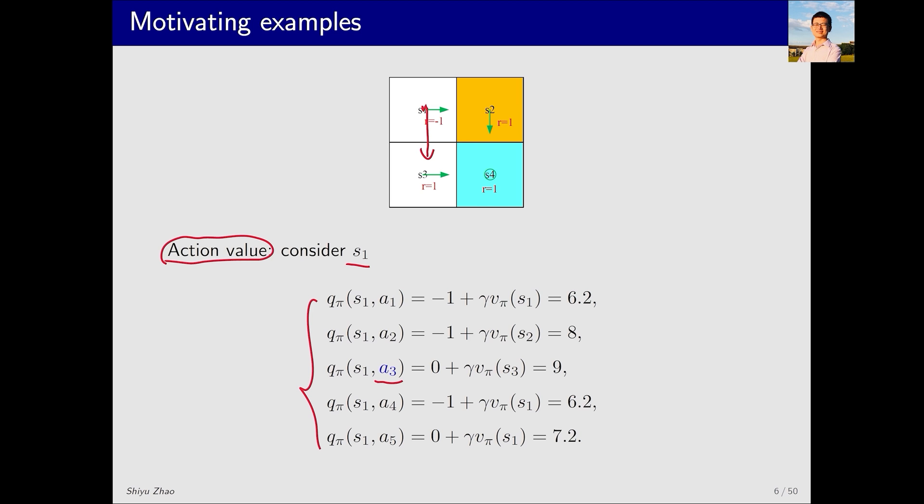If I move down from s1 by taking action a3, what would happen? First, I would receive an immediate reward of 0, followed by gamma, and then I transition to s3, which gives v pi s3. Substituting the specific values for gamma and v pi s3, we get 9. Similarly, other actions can be calculated.